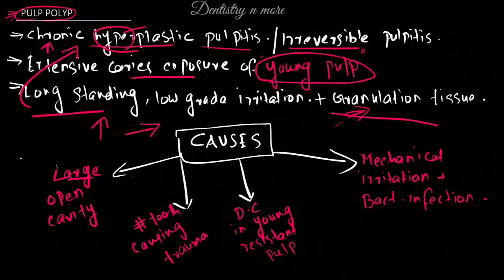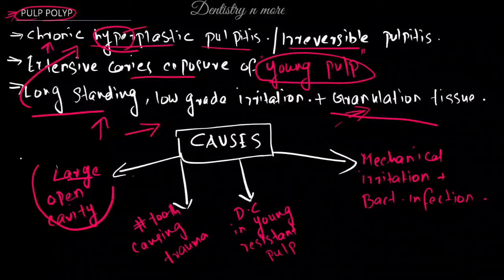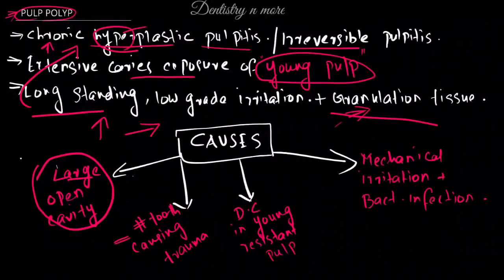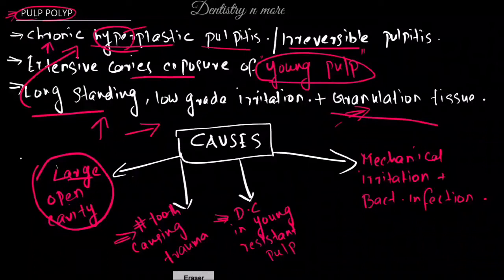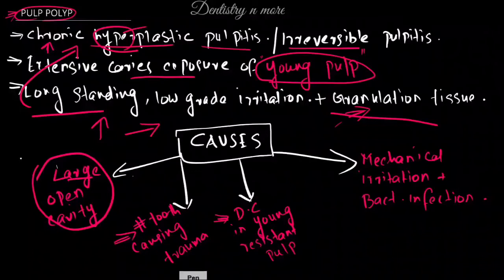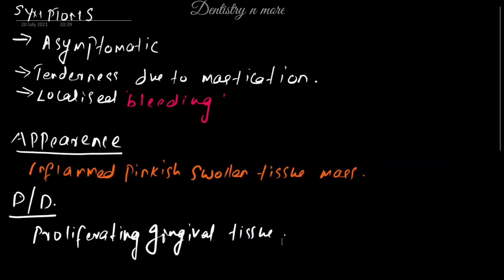The causes of pulp polyp include: caries, which results in a large open cavity; a fractured tooth causing trauma; dental caries in a young resistant pulp; and also mechanical irritation from chewing and bacterial infection.